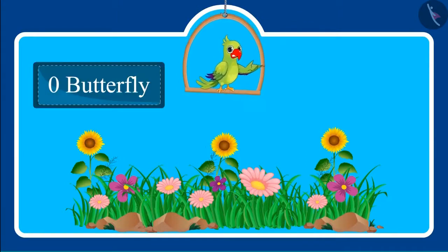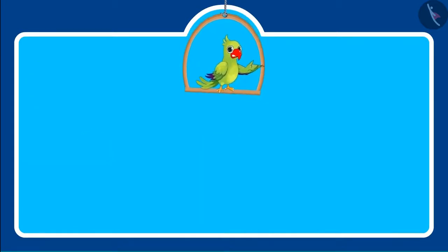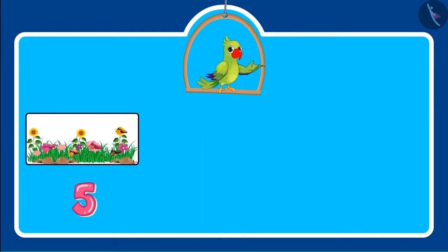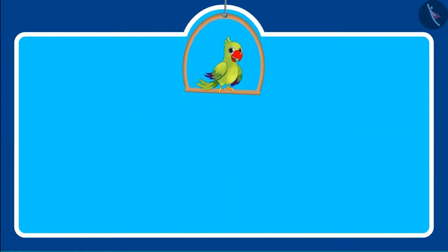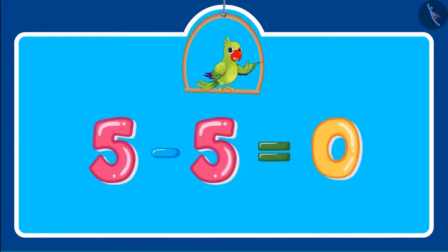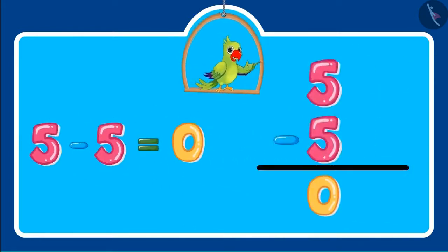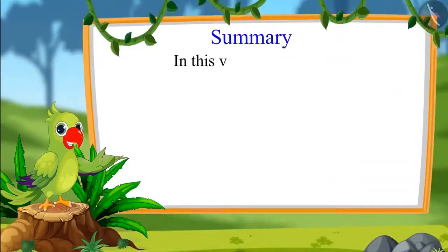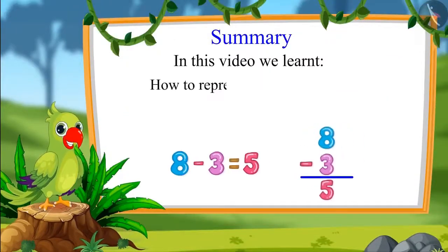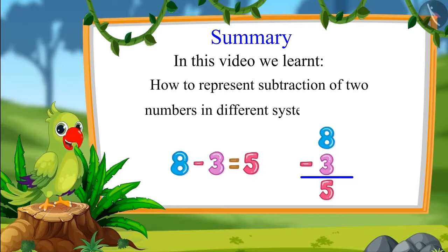There are not even a single butterfly left on the flower. This means 0 butterflies are left. Very good. So children, did you see that if we subtract 5 from 5, then 0 is left? Now let us write this also in a systematic way. That was all for today. In this video, we learned how to represent the subtraction of two numbers in different systematic ways.